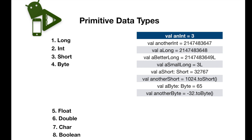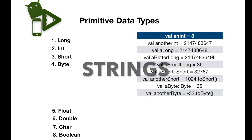Primitive data types include: Long, Int, Short, Byte, Float, Double, Char, and Boolean. If you are going to use String, the String is not a primitive data type. It is not a primitive data type — it is a different type.